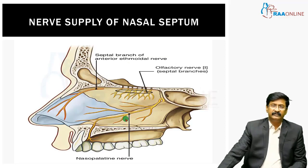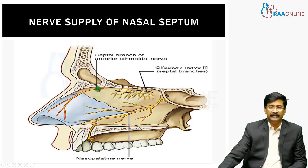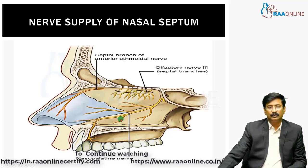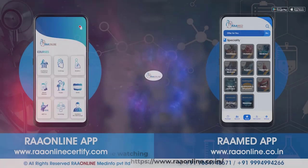What is the nerve supply of the nasal septum? The nerve supply is mainly from the anterior ethmoidal nerve — specifically the septal branch of the anterior ethmoidal nerve. On the roof, you have the olfactory nerves, and then you have the nasopalatine nerves. These are the primary nerve supplies for the nasal septum.